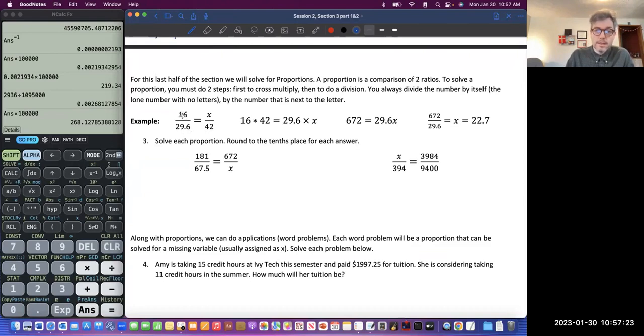So here we have a proportion set up. 16 divided by 2.96 is equal to x, x is this unknown number, divided by 42. Now, what we're going to actually do to solve this is we're going to cross multiply. We're going to multiply. So 16 times 42 equals 29.6 times x. So we've cross multiplied. That's what we did there. Then we're going to divide both. Well, actually what they did was they just did 16 times 42.